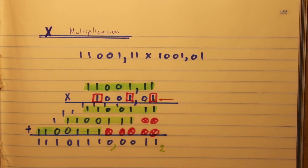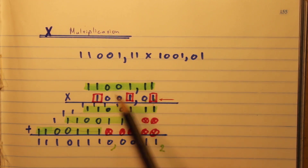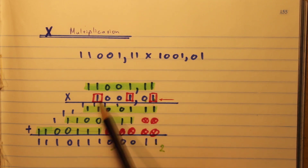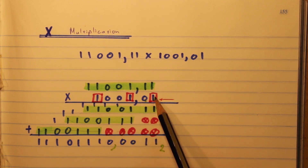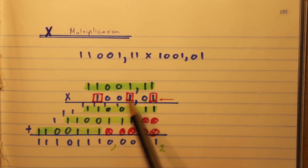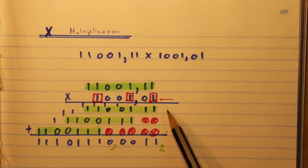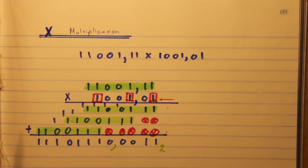One last very important thing: when you look at the bottom number, count the ones. This bottom number has three ones, so there will be three rows. If there were four ones, there would be four rows. That's a quick way to know how many partial products you'll be writing down.